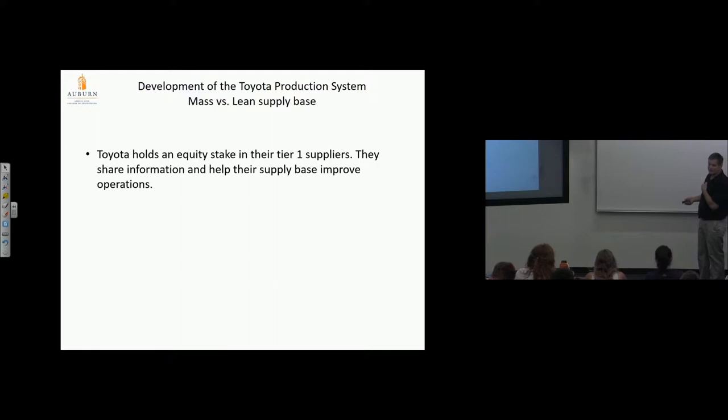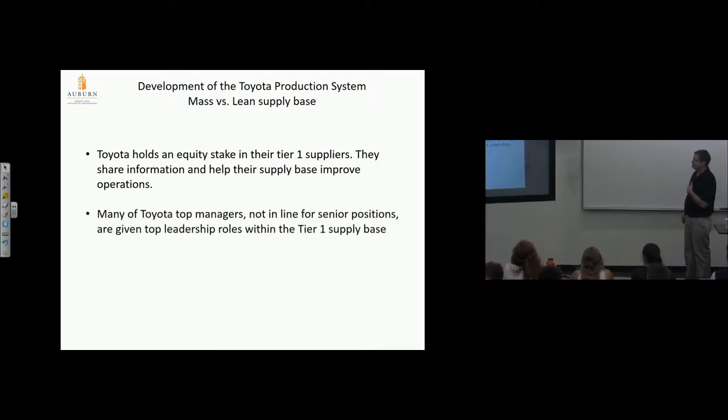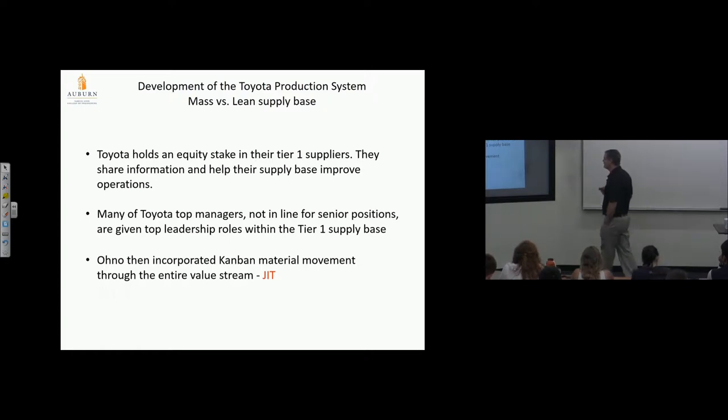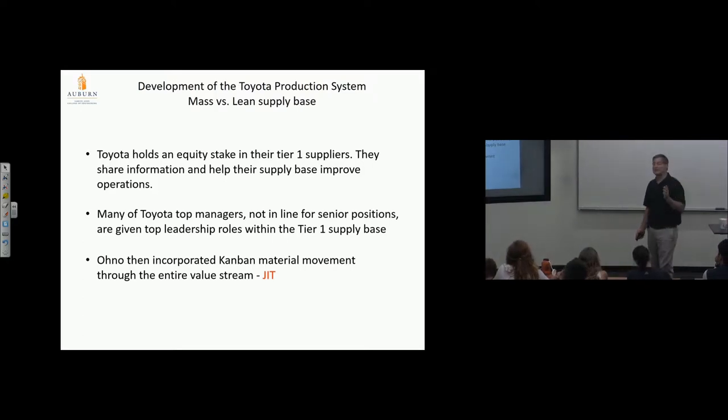Ono then incorporated Kanban material movement through the entire value stream. So if you have the assembly plant here, all the material that moves within that plant, that's important. Just-in-time and quality, Jidoka, how about the rest? If we start working through that whole supply base and we create just-in-time flow of material on every link all the way to the bottom, boy, we've got something powerful that might be able to put the arsenal of democracy out of business. We have come up with a third generation of manufacturing.